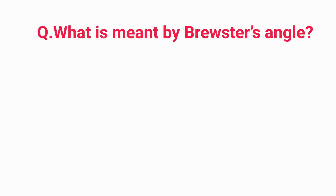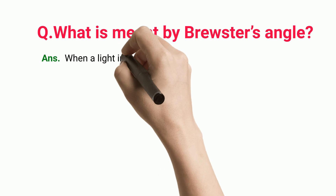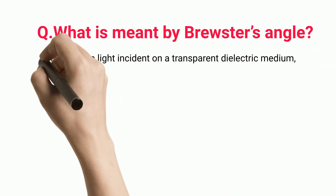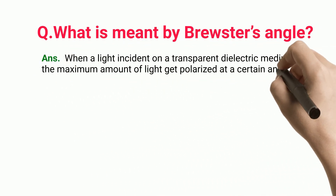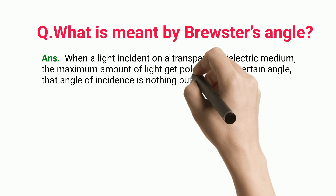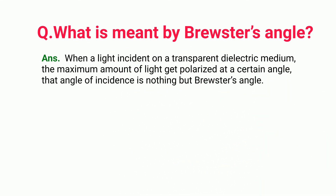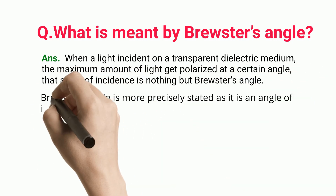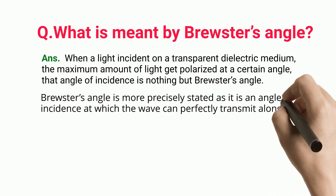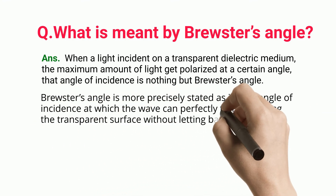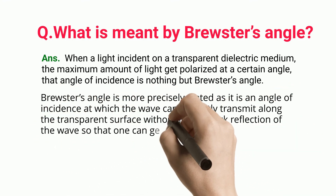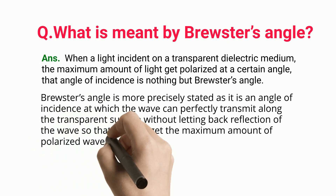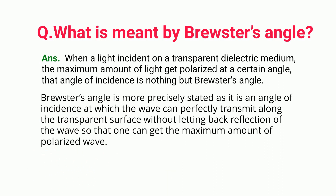What is meant by Brewster's angle? When light is incident on a transparent dielectric medium, the maximum amount of light gets polarized at a certain angle — that angle of incidence is Brewster's angle. More precisely, Brewster's angle is the angle of incidence at which the wave can perfectly transmit along the transparent surface without back reflection, so that one can get the maximum amount of polarized wave.